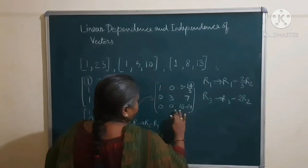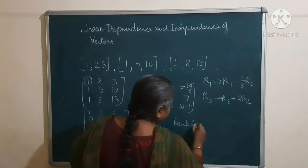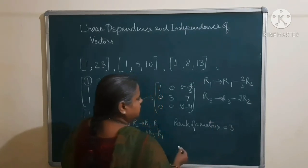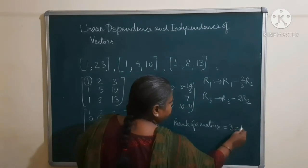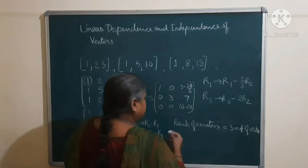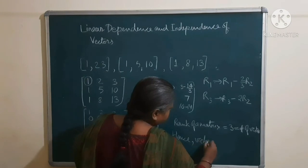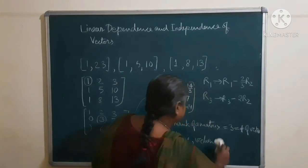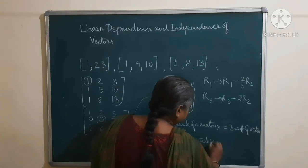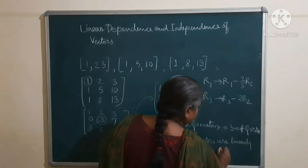This matrix shows that the rank of the matrix is equal to 3. Since the rank equals the number of vectors, these vectors are linearly independent.